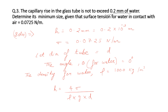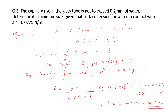We use the expression for capillary rise: h = 4 × surface tension divided by (density × acceleration due to gravity × diameter). Putting all the values into this equation and solving for diameter, we get the value of diameter as 0.148 meters, that is 14.8 centimeters.